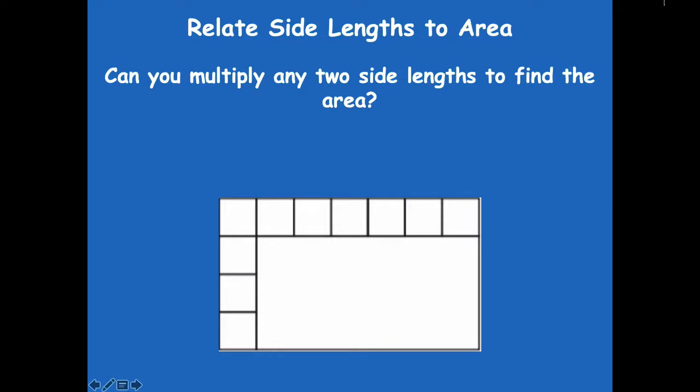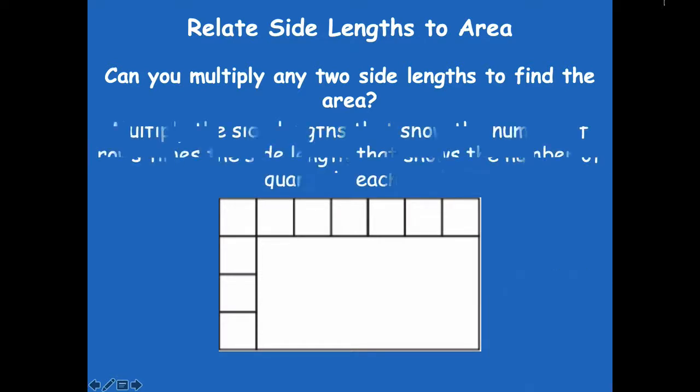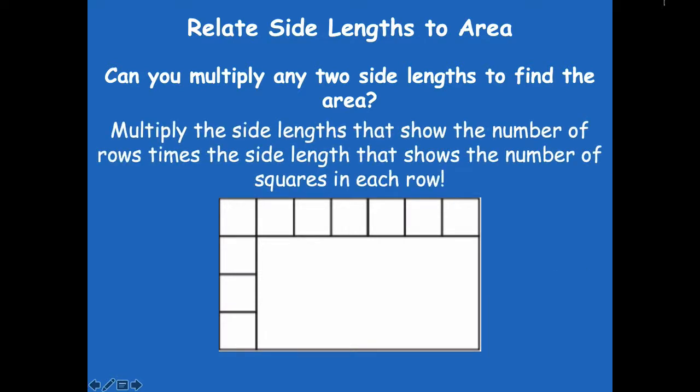Can you multiply any two side lengths to find the area? No, you have to multiply the two that are next to each other. You're going to multiply the side that shows the number of rows and the side length that shows the number of squares in each row — so it's the side and the top, or it could be the bottom. Basically the two sides that are next to each other.